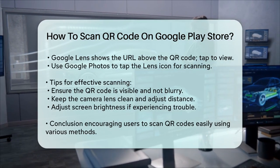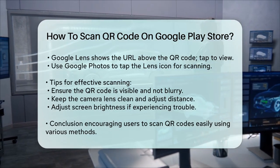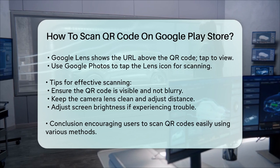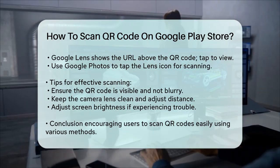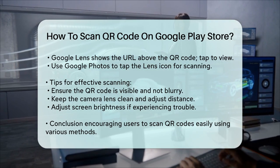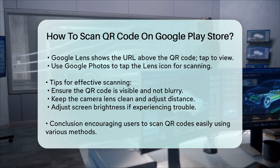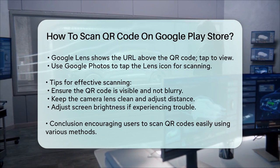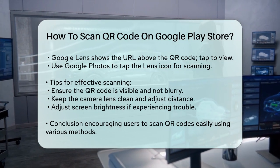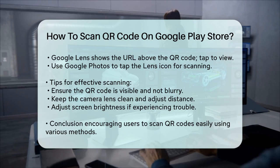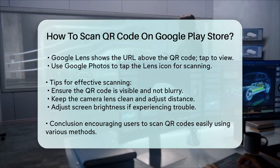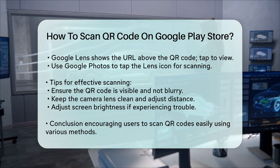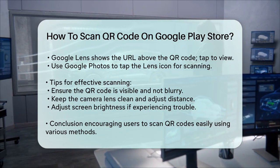Tips for scanning QR codes. To ensure smooth scanning, make sure the QR code is clearly visible and not smudged or blurry. Keep your camera lens clean and adjust the distance between your camera and the QR code until it scans correctly. If you're having trouble, try adjusting the brightness of the screen showing the QR code and keep your phone upright. By following these steps, you should be able to scan QR codes effortlessly on your Android device, whether you're using the native camera app, Google Lens, or a third-party app. Happy scanning!